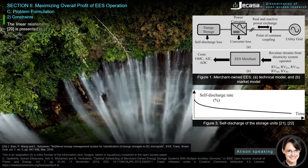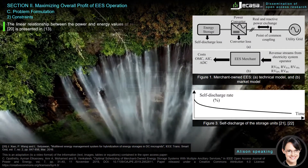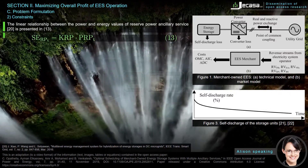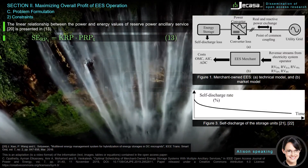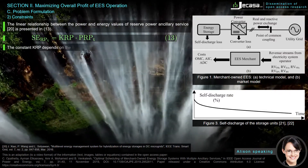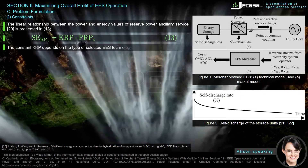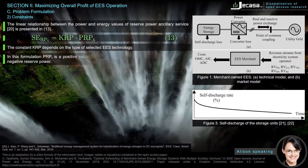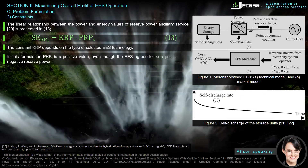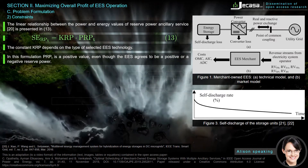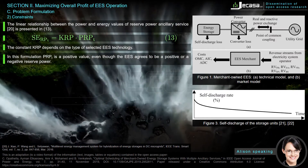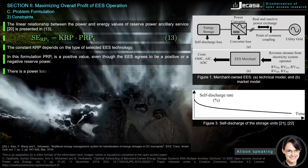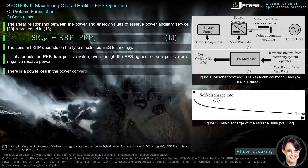The linear relationship between the power and energy values of reserve power ancillary services is presented in equation 13. The constant k_RP depends on the type of selected EES technology. In this formulation, P_RPt is a positive value, even though the EES agrees to provide either positive or negative reserve power.